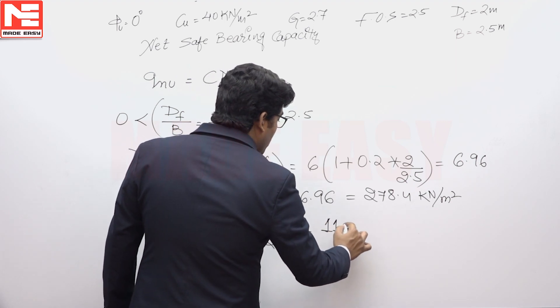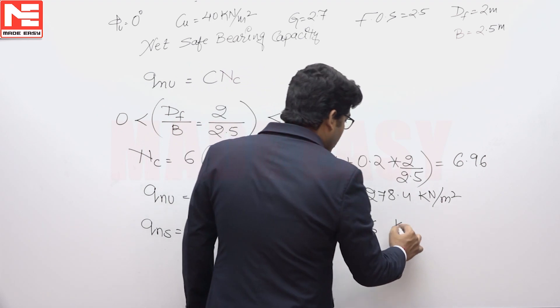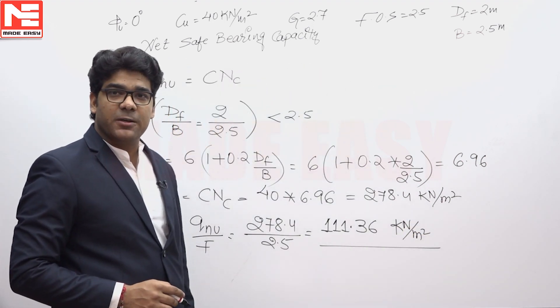So the final solution will be 111.36 kilonewtons per meter square. The final answer is 111.36 kilonewtons per meter square.